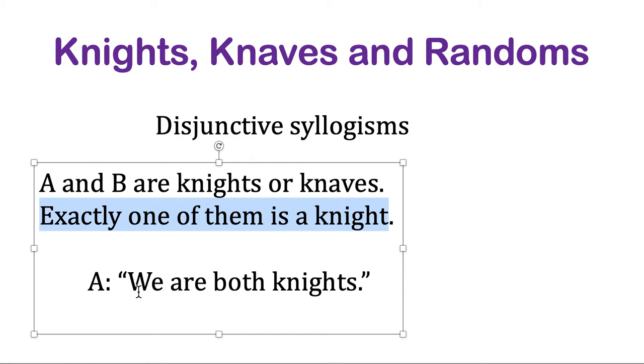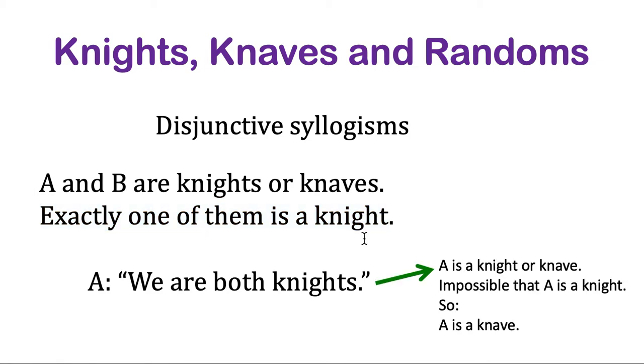So just like the disjunctive syllogism, we can reason in this way: A is a knight or a knave, but it's impossible that A is the knight, so A has to be the knave. We just get to eliminate one of those possibilities. Of course, that also tells us what B is. We know B is a knight in this case because one of them has to be.